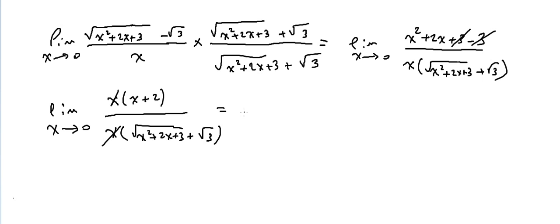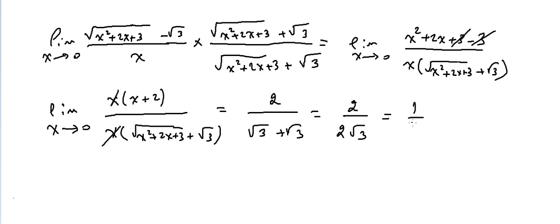Now we can substitute x=0: (0+2) over (√(0+0+3) + √3) = 2 over (√3 + √3) = 2 over 2√3 = 1/√3. To rationalize, multiply by √3/√3, and we end up with √3/3.